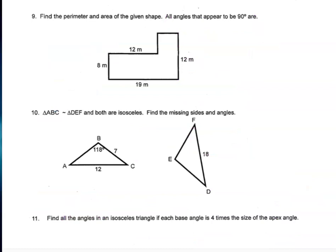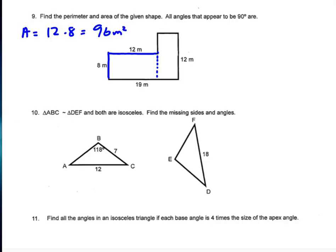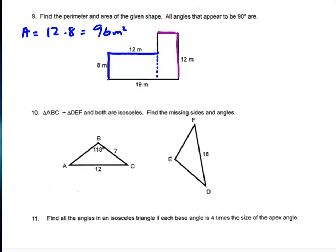Question 9: find the perimeter and area of the given composite shape where all apparent right angles are 90 degrees. Think of it as two rectangles. The first rectangle has sides 12 and 8, giving an area of 96. The whole figure is 19 units wide; we've used 12, so the second rectangle's width is 7. The second rectangle has sides 12 and 7, giving an area of 84. Total area = 96 + 84 = 180 square meters.